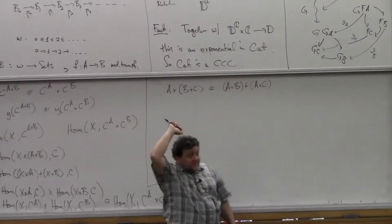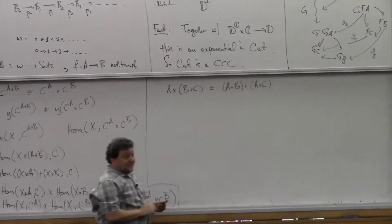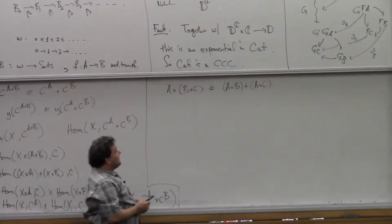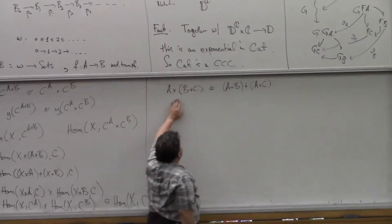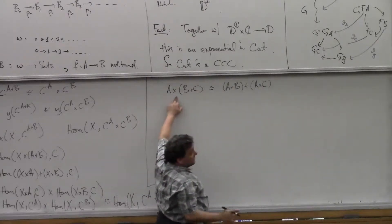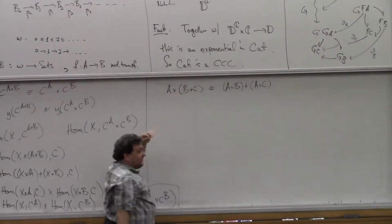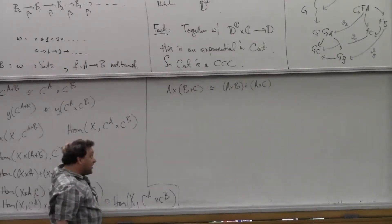So this is saying that this left adjoint preserves the coproduct. And that's how I teach my kids the distributive law for arithmetic — first we learn that left adjoints preserve coproducts.